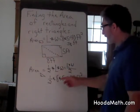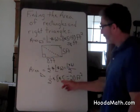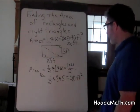Or we can multiply 1 half times 8 and get 4, 4 times 5 is 20 square feet.